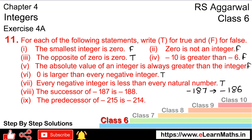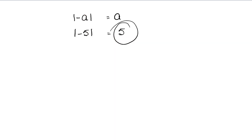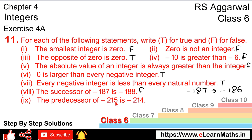Next part: the predecessor of minus 215 is 214. The predecessor is the previous smaller number. For example, the successor of 5 is 6 and the predecessor of 5 is 4. Similarly, for minus 5, the predecessor is minus 6. So for minus 215, the predecessor would be minus 216, not minus 214. Hence this statement is false.